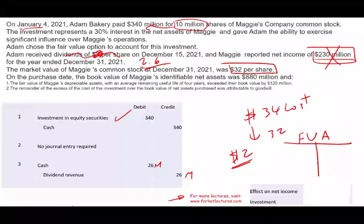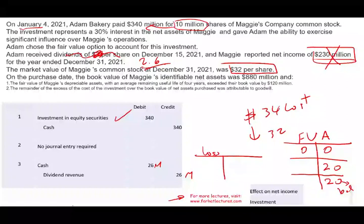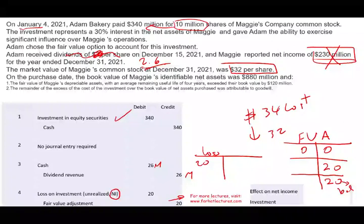We are adjusting the portfolio or investment to market. Since this is the first year we purchased this investment, the fair value adjustment starts at zero. We have a loss, so the balance should be $20 million — because $2 times 10 million equals $20 million. Therefore we credit Fair Value Adjustment $20 million and debit a Loss on Investment $20 million. That loss goes into net income.